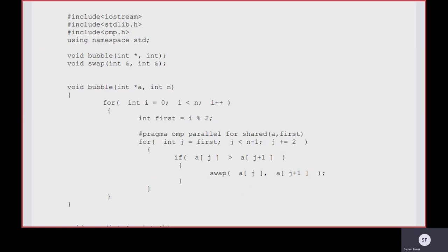For int j equal to first, j less than n minus 1, j equal to j plus 2 — if j equals first and is an odd element, the next odd element will be j plus 2, so it is incremented by 2. In each step, it will consider only either odd or even elements. If j equals first is an even element, the next even element will also be j plus 2.